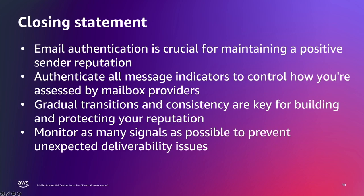In conclusion, mailbox providers assess each sender based on observing various indicators within the messages they receive. The best way to isolate your reputation is to authenticate each indicator so that the mailbox provider knows you are responsible for the indicators they use to assess reputation. Email authentication is absolutely critical for maintaining a positive sender reputation with mailbox providers. By authenticating all the key message indicators, you can take control of how your messages and your organization are perceived. When it comes to building and protecting that reputation over time, gradual transitions between identifiers and consistency in your sending patterns are essential. Follow these principles and you'll be well on your way to strong email deliverability.